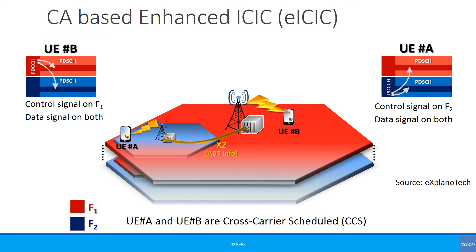There is another approach — carrier-based eICIC — which uses cross-carrier scheduling. In this case, for the macro cell one particular layer sends the control information, and for the small cell another layer sends the control information. This way the control information can reach the UE safely, and only the data encounters interference. This approach is designed to work well for carrier-aggregated cells.